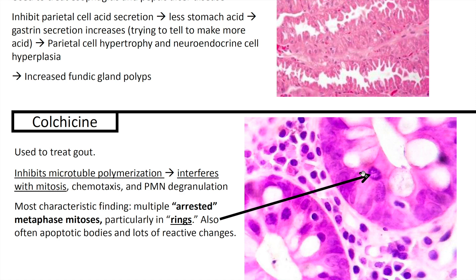Next up we've got colchicine, a medication used to treat gout. It inhibits microtubule polymerization, leading to interference of mitosis, chemotaxis, and neutrophil degranulation. The most characteristic finding is multiple arrested metaphase mitoses, particularly in rings — ring mitosis. There are also often apoptotic bodies and lots of reactive changes. Taxanes as a class and colchicine often lead to this ring mitosis, which is classic and very testable.